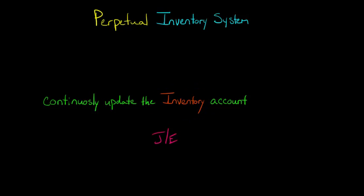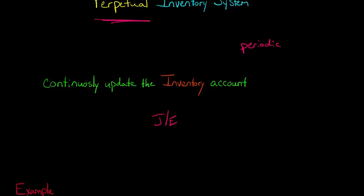This is in contrast to the periodic inventory system where we're only going to update the inventory account at the end of the period, whether it be a quarter, the year, and so forth. We'll get into the differences between perpetual and periodic inventory systems in another video, but right now let's just understand how the perpetual system works and the journal entries we'd have to make.